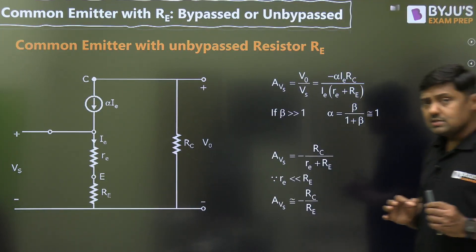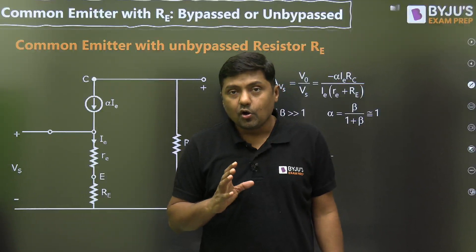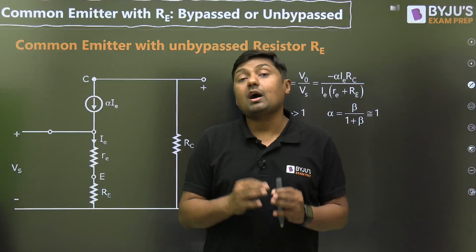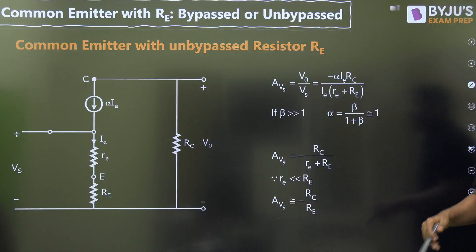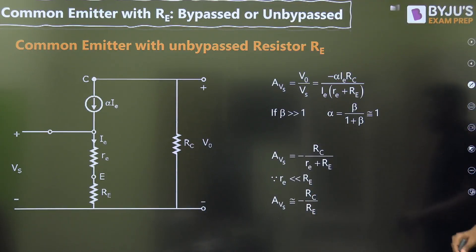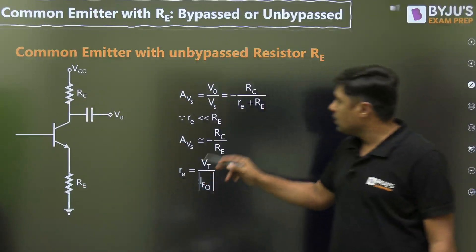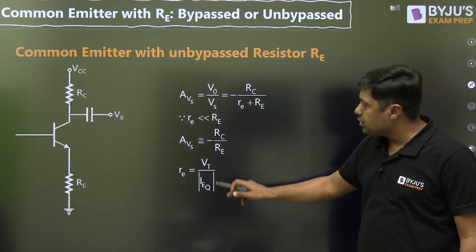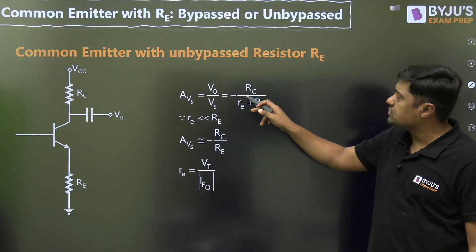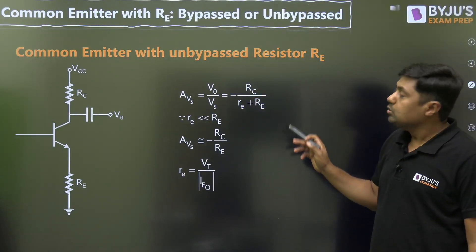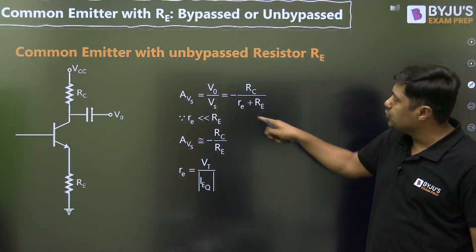Since capital RE is very, very much greater than small re, the approximate voltage gain is minus RC by RE. This formula minus RC/RE is independent of the transistor parameter small re, and because of that this gain is highly stable. RC is stable, RE is stable, so the gain is stable — and that is because of negative feedback across RE. If small re and capital RE are comparable, then use the exact formula: minus RC divided by (small re + capital RE).